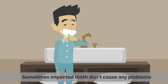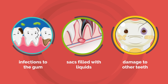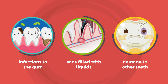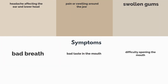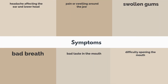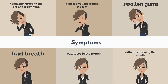Symptoms: Sometimes an impacted tooth doesn't cause any problems, but other times it can cause infections to the gum, sacks filled with liquids, or damage to other teeth. When that happens, the patient may experience headache affecting the ear and lower head, pain or swelling around the jaw, swollen gums, bad breath, a bad taste in the mouth, and difficulty opening the mouth.